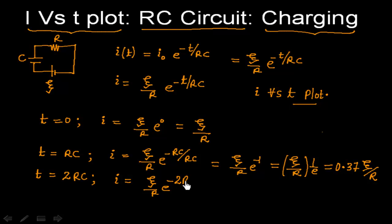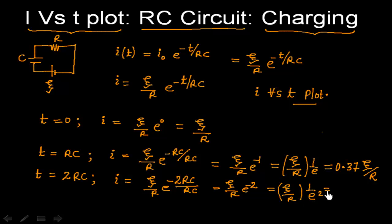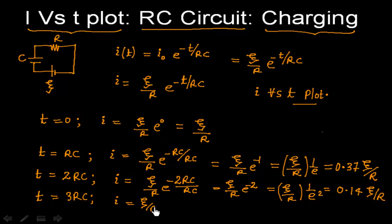Similarly, at two time constants (t = 2RC), I = (ξ/R) · e^(−2) = 1/e² · (ξ/R), and the value comes out to be 0.14 · (ξ/R). We can also calculate for three time constants: I = (ξ/R) · e^(−3) = 1/e³ · (ξ/R), and this value is 0.05 · (ξ/R).